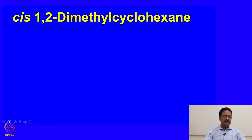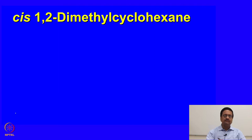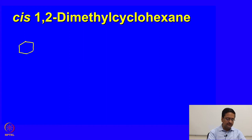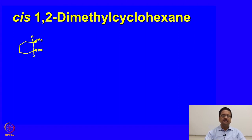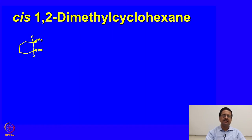We would like to start with cis-1,2-dimethylcyclohexane. When we write cis-1,2-dimethylcyclohexane, as you may know from your previous knowledge, we used to write cyclohexane as a hexagon. When you say cis, that means you have two methyl groups on adjacent carbon atoms with both of them upwards and with the corresponding hydrogens downwards. When we try to draw this molecule in the chair form, we should remember that both the methyl groups should remain in the upward direction.